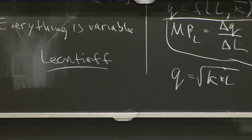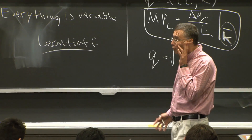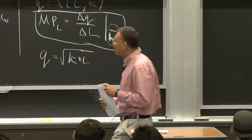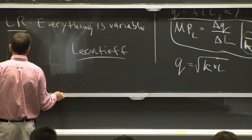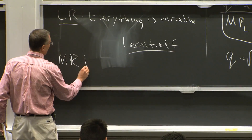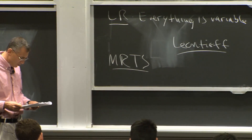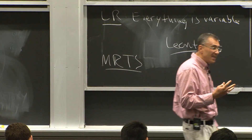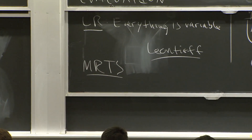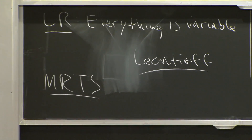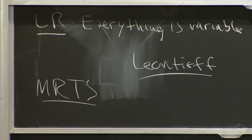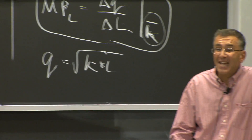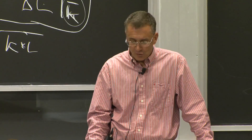The bottom line is that substitutability between capital and labor determines the slope of isoquants. We call this the marginal rate of technical substitution (MRTS), which is the slope of the isoquants — just as the marginal rate of substitution is the slope of indifference curves.